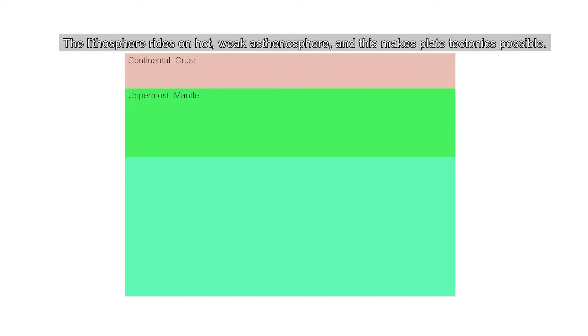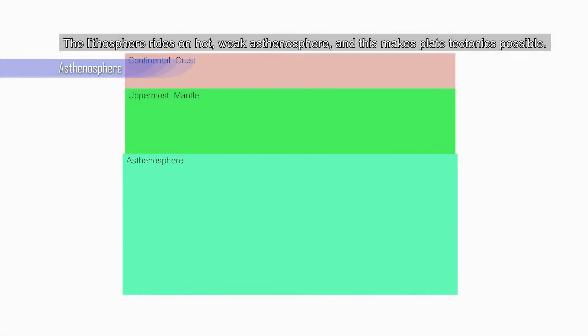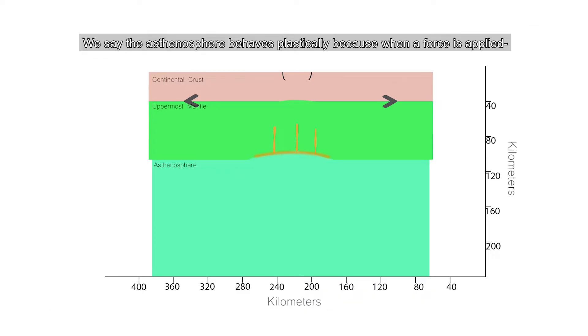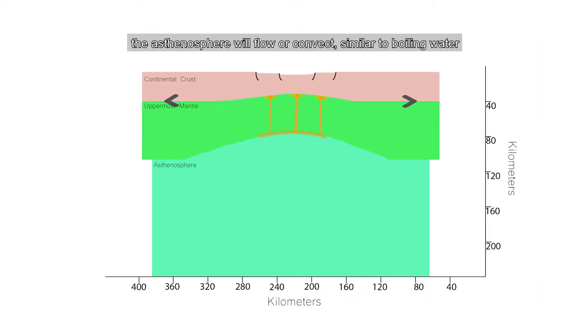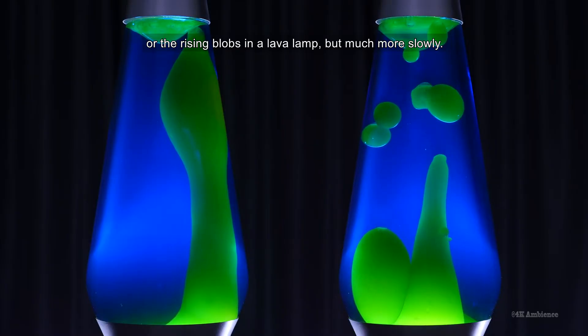The lithosphere rides on hot, weak asthenosphere, and this makes plate tectonics possible. We say that the asthenosphere behaves plastically because when a force is applied, the asthenosphere will flow or convect, similar to boiling water or the rising blobs in a lava lamp, but much more slowly.